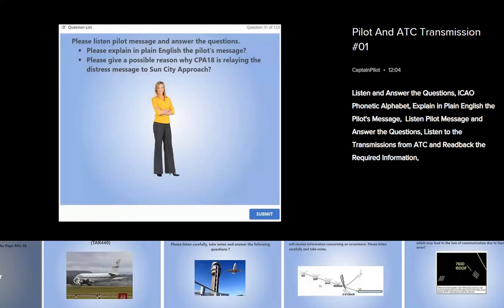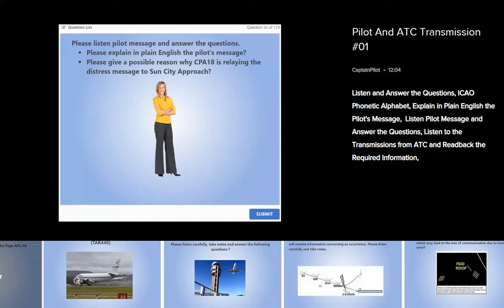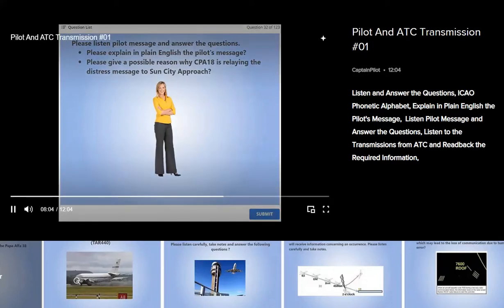Relaying the distress message to Sun City Approach. Pilot message, Alfaville Approach, Charlie Papa Alpha 18, I have intercepted Mayday from Tango Romeo Alpha Echo 459, I say again Tango Romeo Alpha Echo 459, very low on fuel, one engine shutdown, flight level 230, 10 miles north of Tango 1, heading to Alfaville for emergency landing. Please explain in plain English the pilot's message.